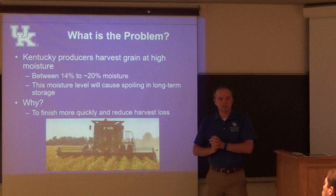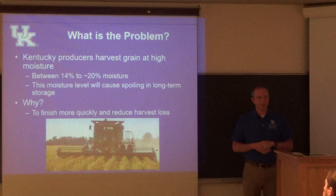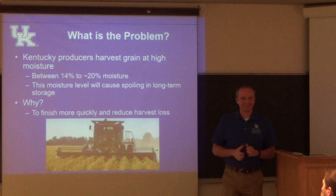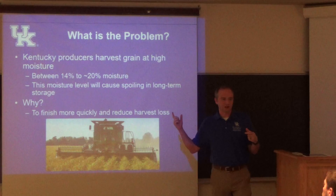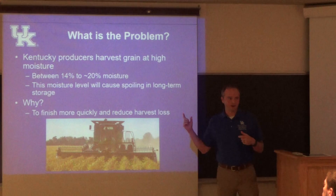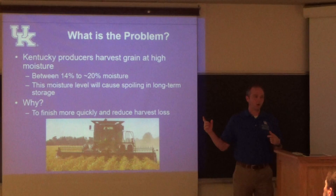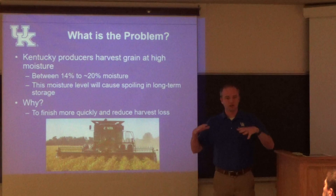So what's the problem? Kentucky producers harvest their grain at high moisture content. You're trying to get your grain harvested early so that you don't have to worry about a hail storm coming through and knocking all the grain out on the ground, or it can turn off wet and you're never harvesting for days. There's always a chance that the soil starts falling out, so you want to harvest it as fast as possible.